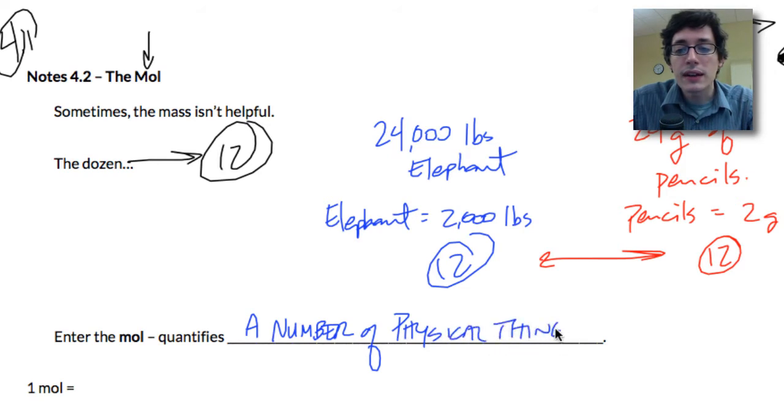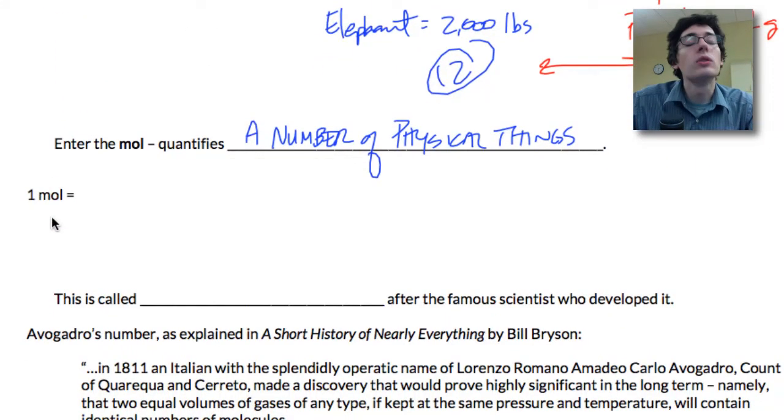So just like I can have a dozen elephants and a dozen pencils, I can have a number of physical things, I can have a mole of anything. Now the difference between a dozen and a mole is that a mole is much, much bigger. How much bigger?